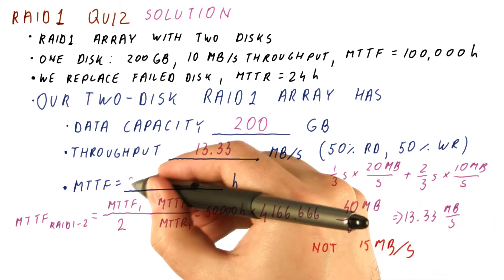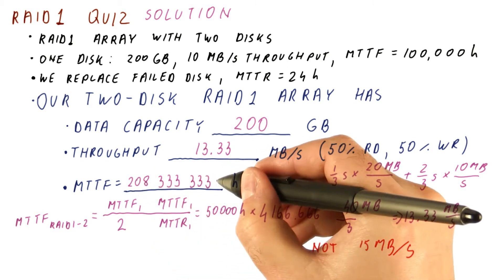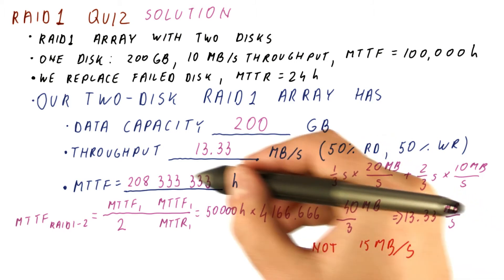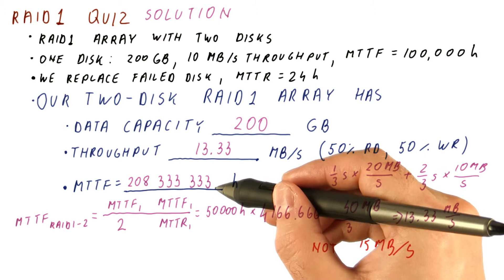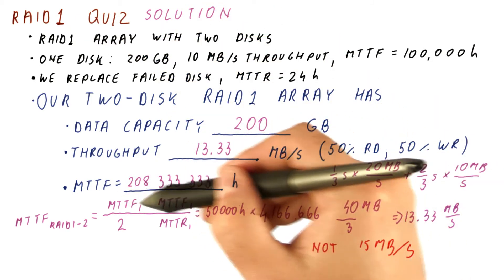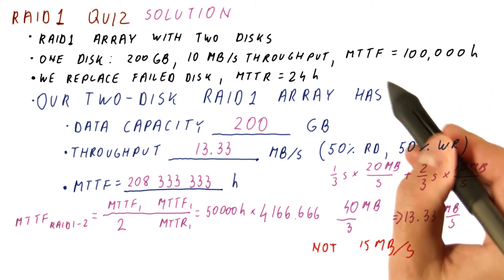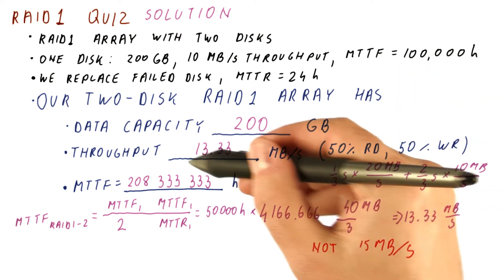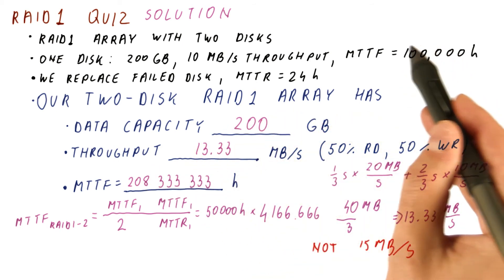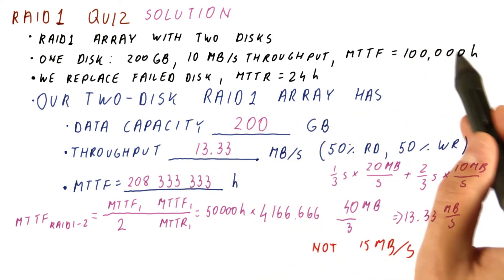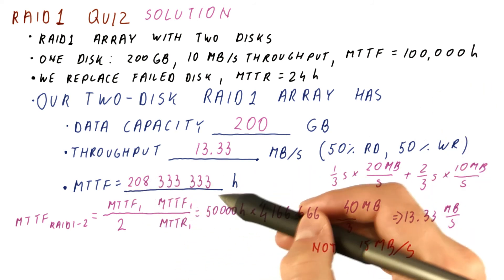And when we multiply this out, we get 208,333,333 hours. So this is a huge amount of time compared to the original disk's MTTF. As you can see, RAID1 dramatically improves reliability. This time is about 11 years. This time is about 24,000 years. So as you can see, the reliability has improved from being able to expect data loss every about 10ish years to something that goes into tens of thousands of years.